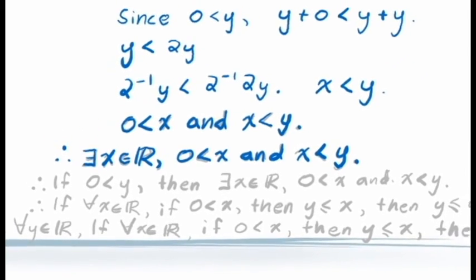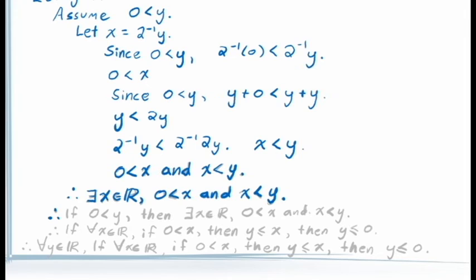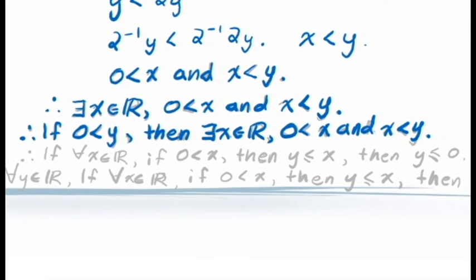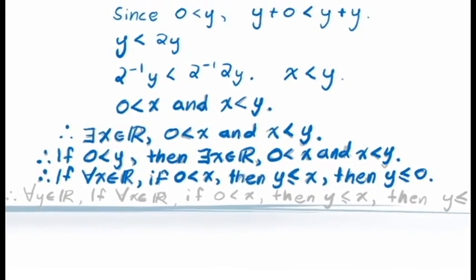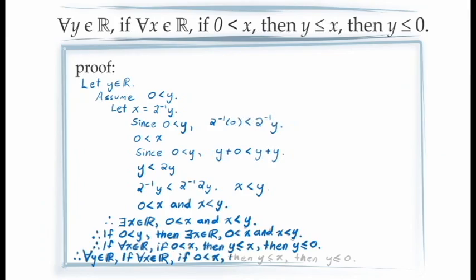Since this was done under the assumption that y was greater than 0, the principle of conditional proof allows us to conclude: if y is greater than 0, then there is at least one value of x for which 0 is less than x and x is less than y. Writing this conditional statement in its contrapositive form gives us exactly the conditional statement we're trying to prove: if for all x in the real numbers, if x is greater than 0 then y is less than or equal to x, then y is less than or equal to 0. And finally, since all of this was done for an arbitrary value of y, we conclude this is true for all values of y.